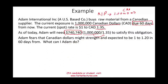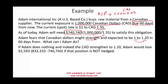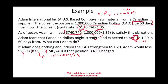But the obligation isn't due today. Adam fears the Canadian dollar might strengthen to a rate of 1.20 in 60 days. If that happens, Adam would need to pay $1,000,000 ÷ 1.20 = $833,333 — a loss of approximately $92,593 compared to today's rate. This illustrates the risk: the Canadian dollar strengthened, meaning the U.S. dollar weakened.